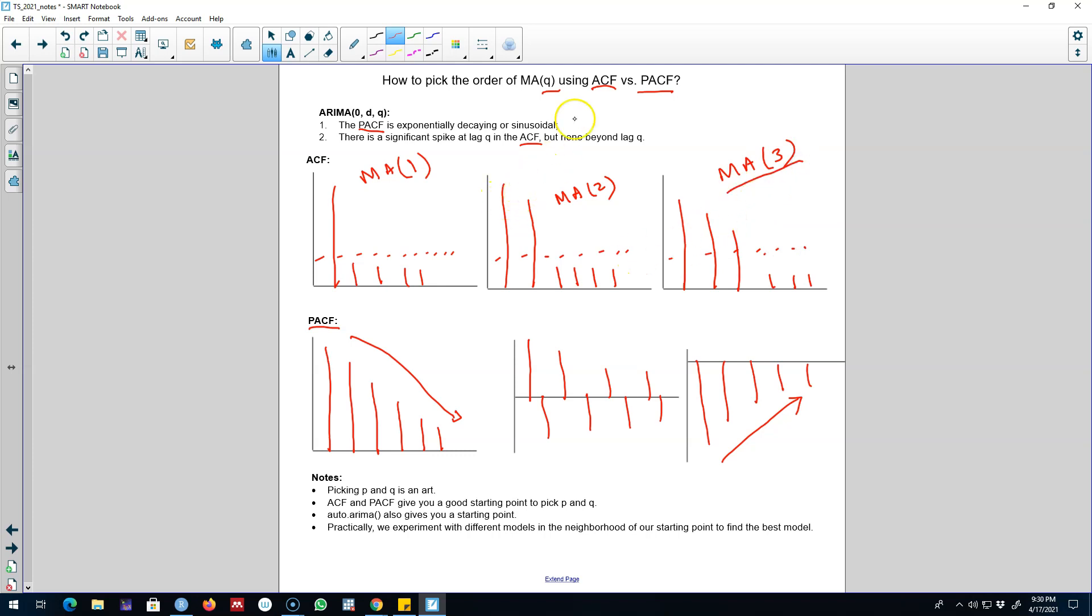So again, when picking a moving average component using PACF and ACF, we look at the partial autocorrelation function which decays exponentially. And then we have a statistically significant spike in the ACF at lag Q and none beyond. If we have only one statistically significant spike, we pick an MA(1) model. If we have two statistically significant spikes, we pick an MA(2) model.